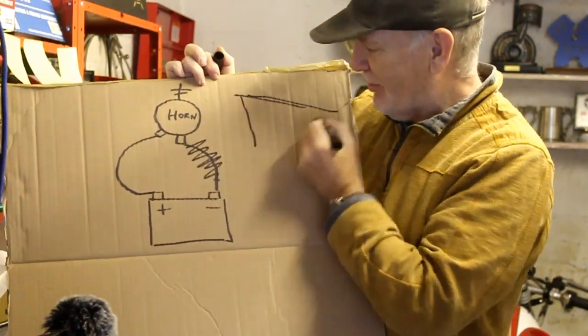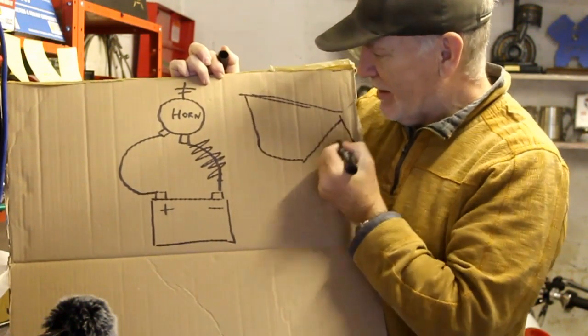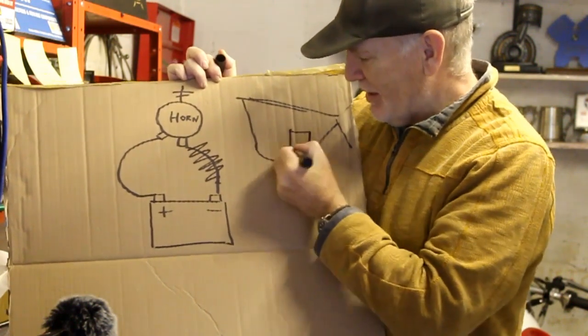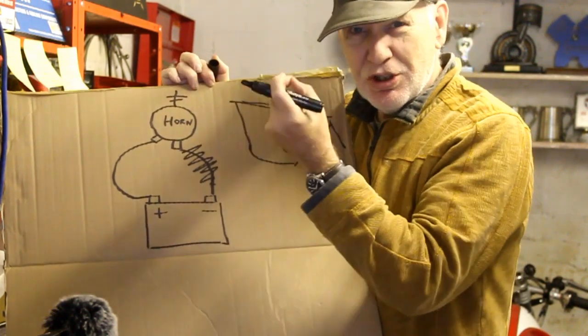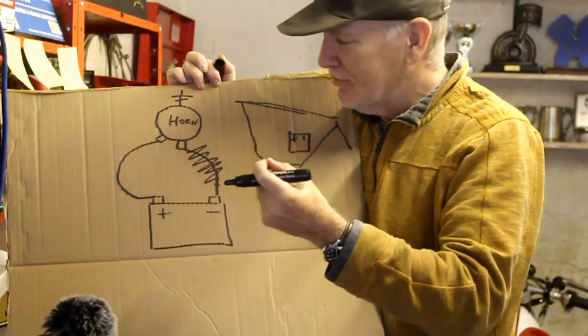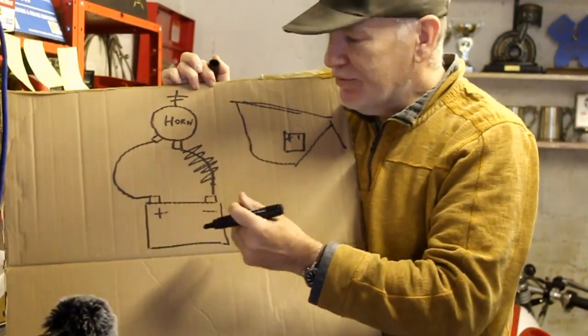Instead, this is earth. This is a symbol for earth. That's earth to the frame itself. So we have the frame. Can't draw a frame, but something like that. The battery sits here, positive, negative.